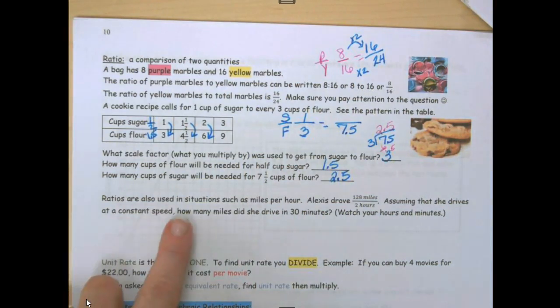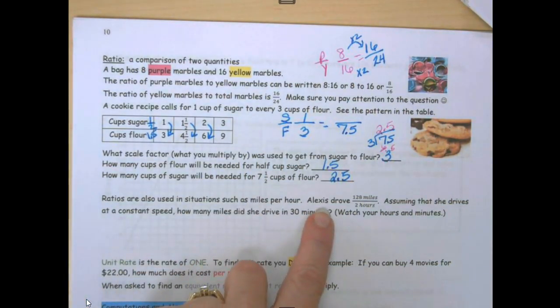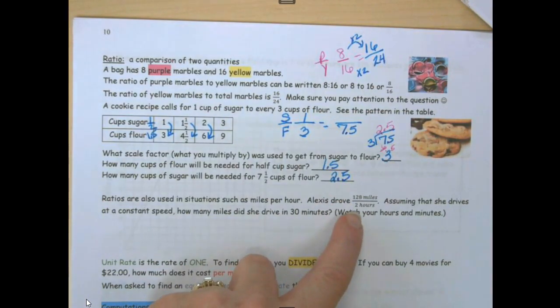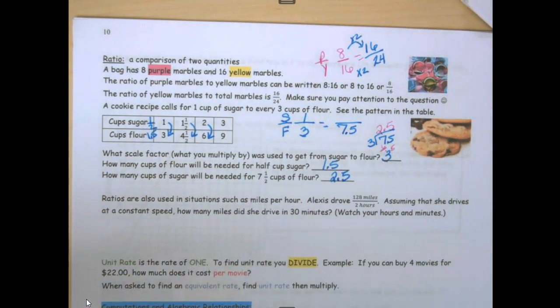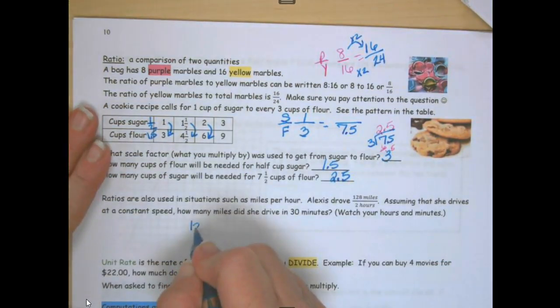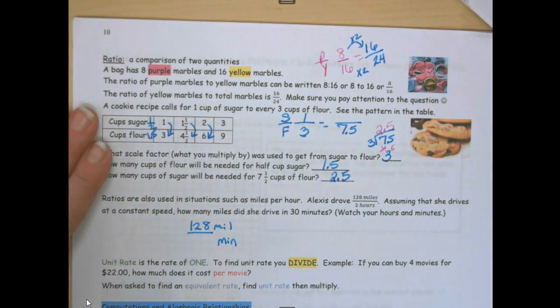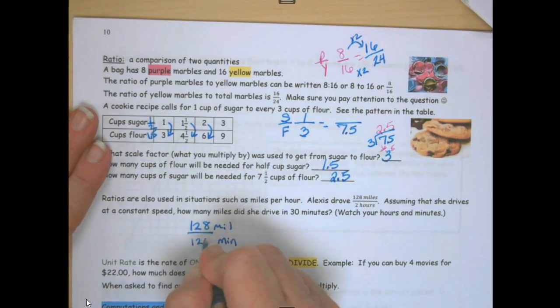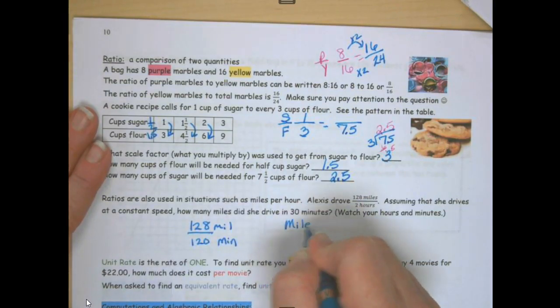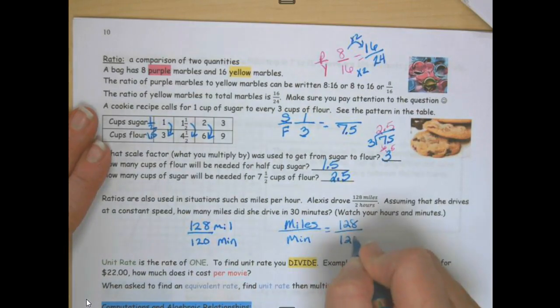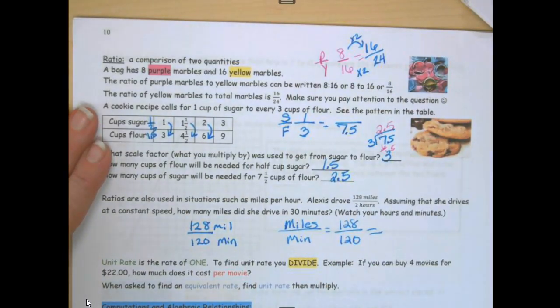Ratios are used in situations such as miles per hour. Alexis drove 120 miles in 2 hours. Assuming that she drives at a constant rate of speed, how many miles did she drive in 30 minutes? So we have 128 miles. And I want this in minutes. 2 hours is 120 minutes. So we have miles and we have minutes. 128 miles, 120 minutes. We're going to set up a proportion. I want it to go to 30 minutes.